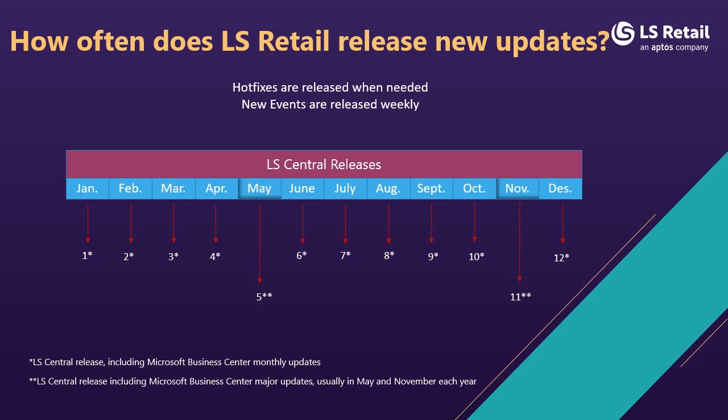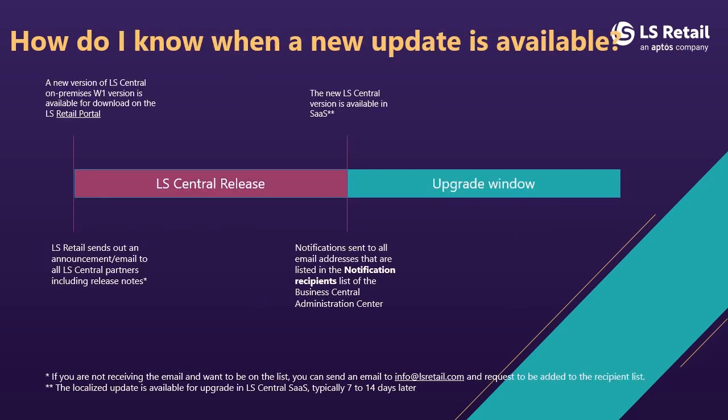Moving from the hybrid server to upgrades of environments in SaaS: LS Central has two major versions each year and monthly service updates, so in SaaS you are updating each month. LS Retail sends out an announcement when the worldwide version is released on the partner portal. To help you plan your work, we state the expected release date of the worldwide version on the country availability page on the partner portal, and when the localized version can be expected to be released in SaaS. When a new LS Central version is available in SaaS, a notification is sent to all email addresses in the notification recipient list in the Business Central Admin Center.